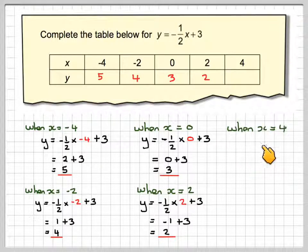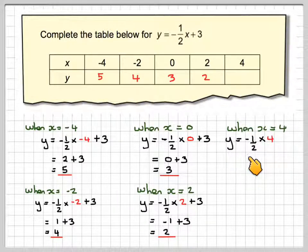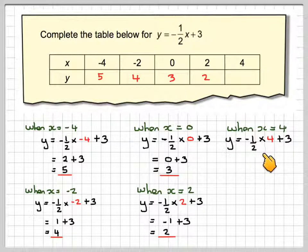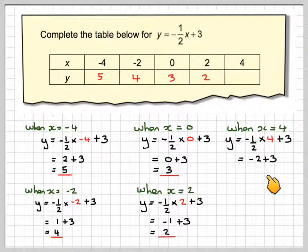When x is equal to 4, we're going to have y equals minus one-half times 4 plus 3. Minus one-half times 4, well, half of 4 is 2, but we've got a negative times a positive, which is going to give me minus 2 plus 3, which gives me 1.